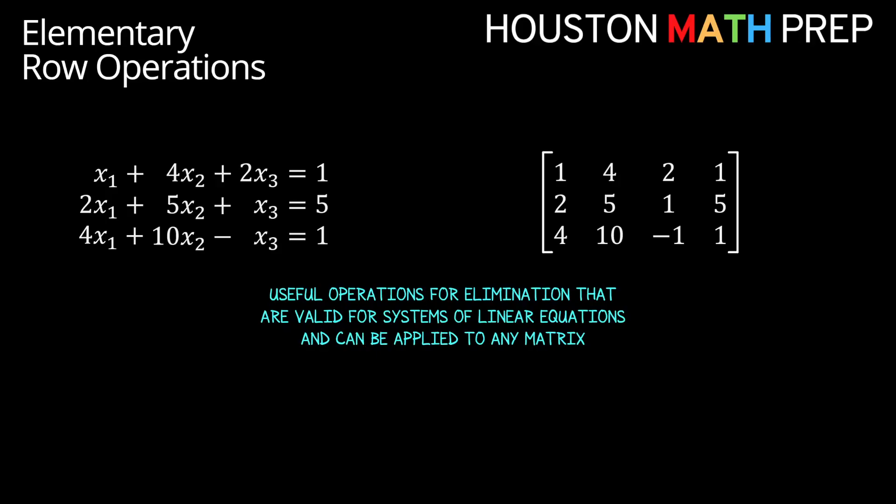Hey everyone, Houston Math Prep here to go over elementary row operations and how we use them to begin working toward echelon forms. These elementary operations for matrices come from the idea that we should be able to take any useful operation for elimination that we would perform on a system of equations and apply those same operations to a matrix to help with row reduction.